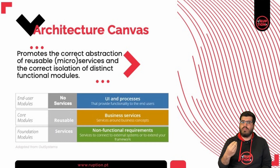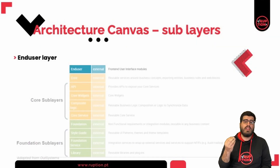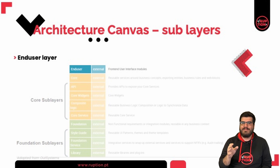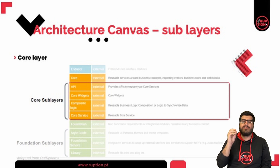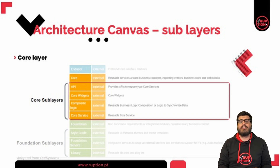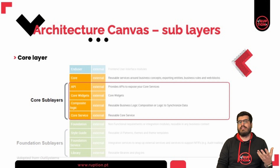Each layer has its own sub layers to better abstract your concepts. The end user layer has only one sub layer, also called the end user — this is where we will place our interface modules. The core layer has four sub layers: API, core widgets, composite logic, and core services. The core layer has our modules containing reusable services and actions built around business concepts and export logic from our entities.